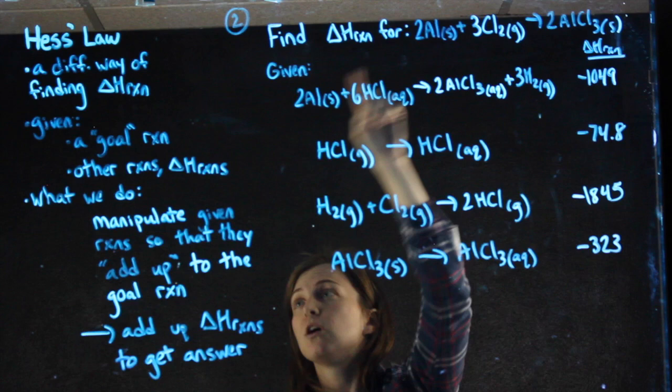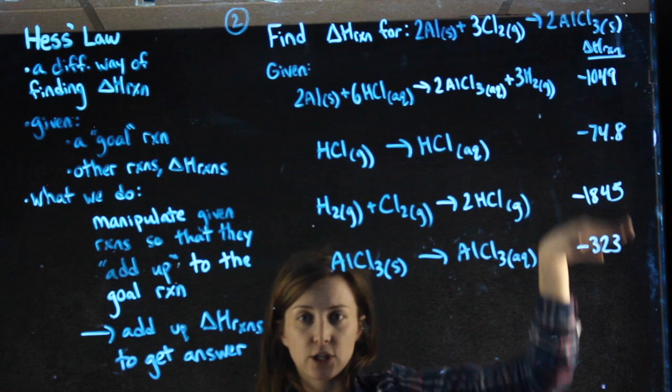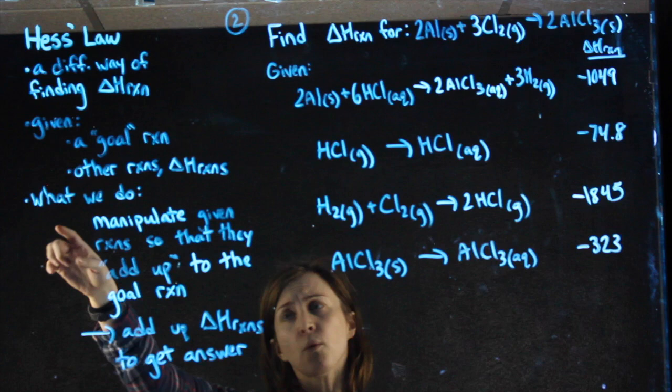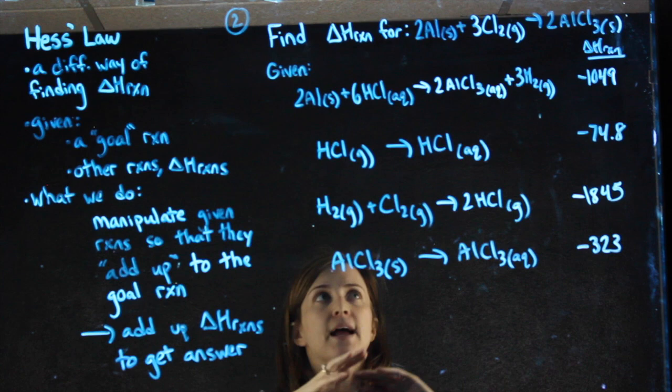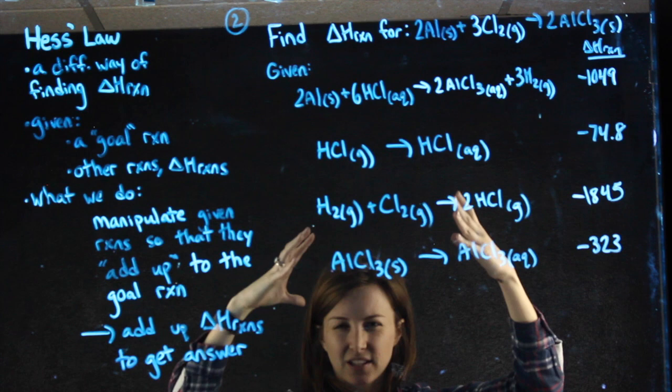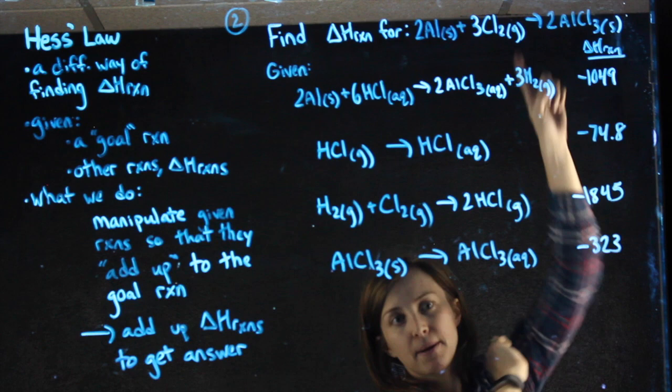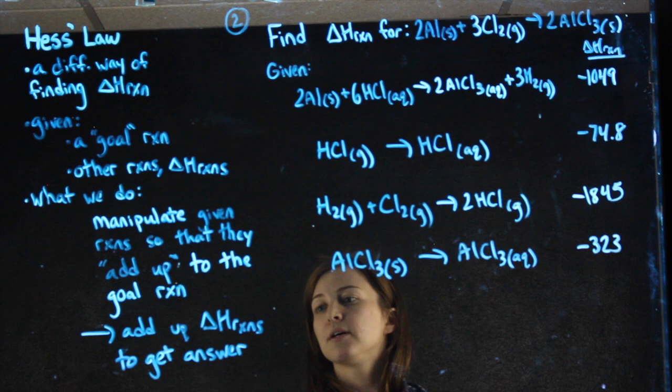The goal reaction is just a name I made up — essentially whatever reaction they give you that you're looking for the delta H of, that's your goal. You'll also be given all these other reactions and their heats of reaction. What we're going to do is take all of these given reactions and manipulate them until we add them all up and what's left, after things cancel out, is exactly our goal reaction.